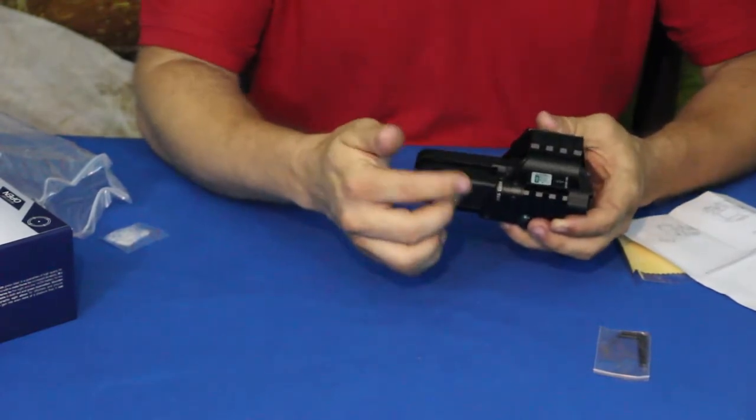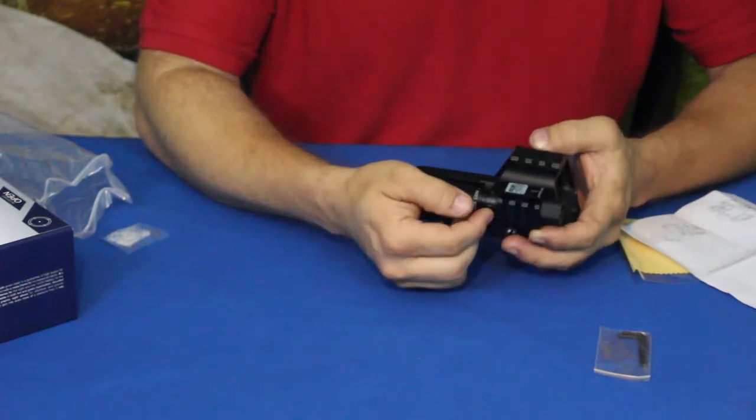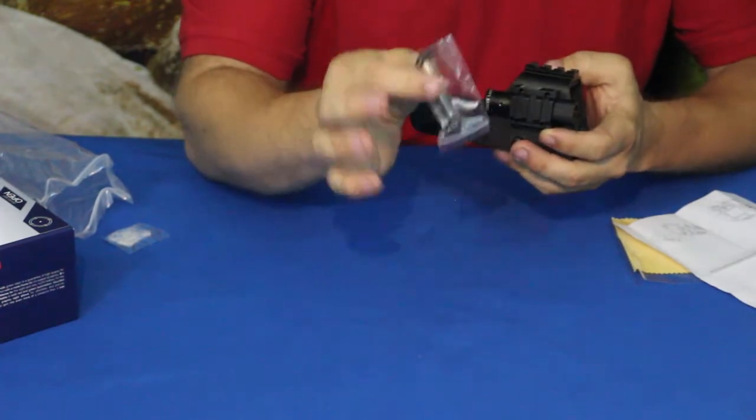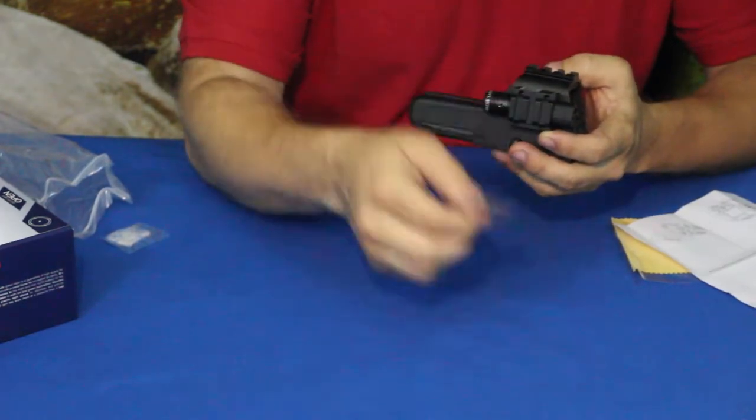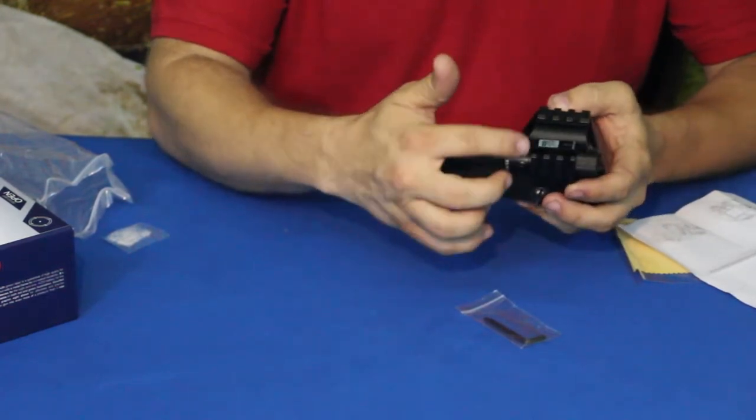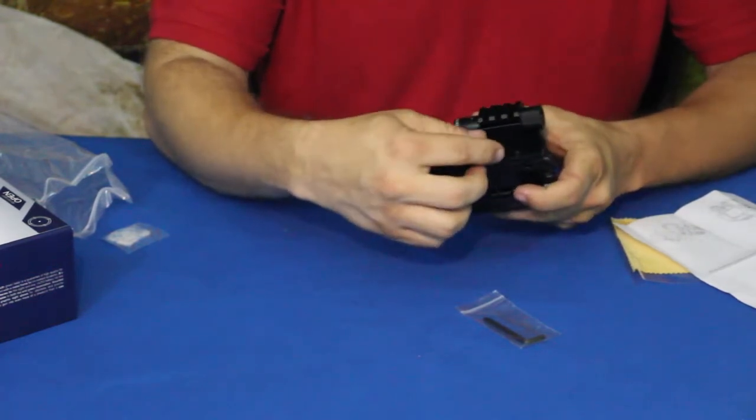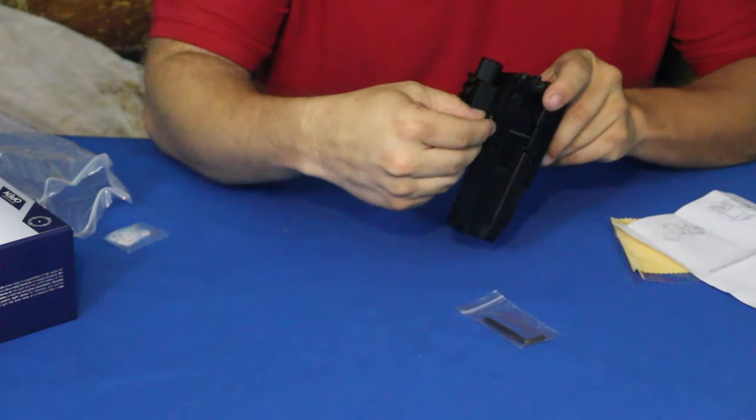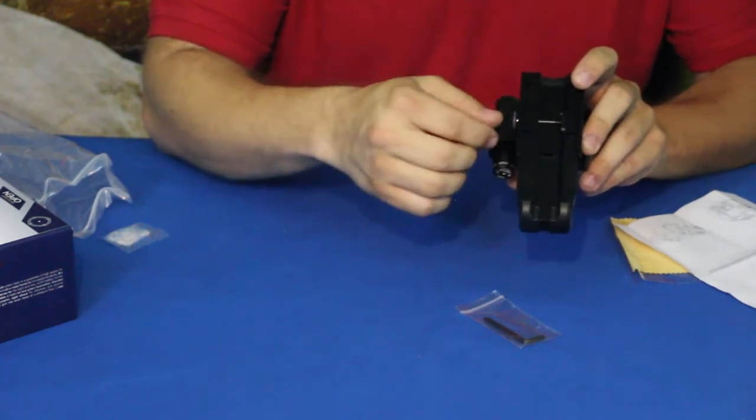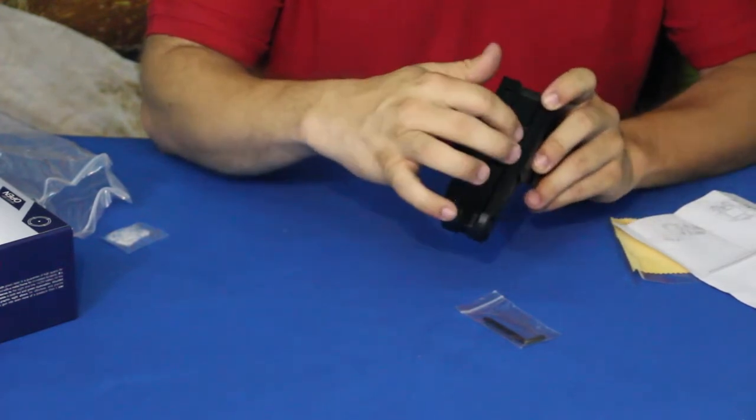You can adjust your windage and elevation on the laser itself. There are two screws right here for one of the Allen wrenches. There's a larger one and the smaller one - the smaller one's going to be for adjusting the windage and elevation. You can use a coin actually, but it does also have some knurling there on the side, so you can actually tighten this down by hand or use a screwdriver since it is a slot.